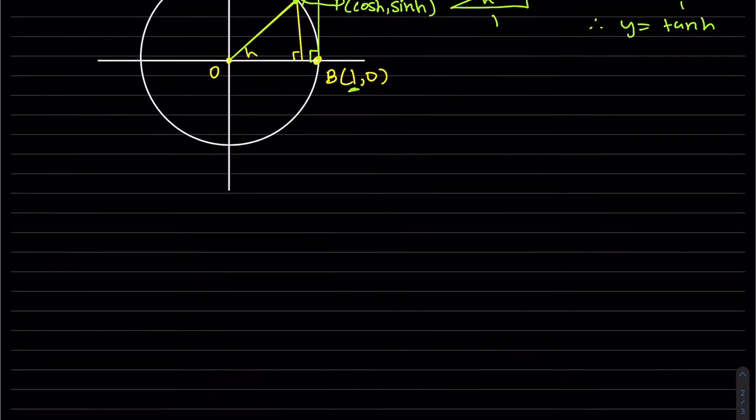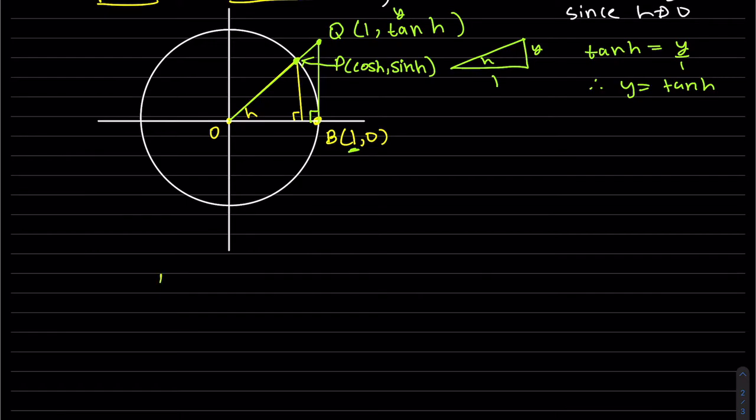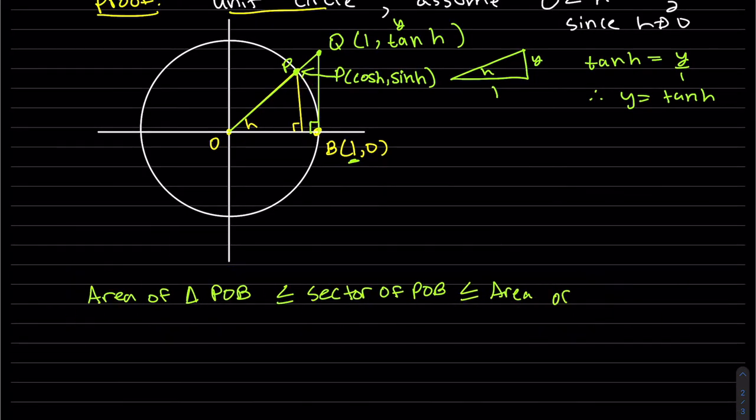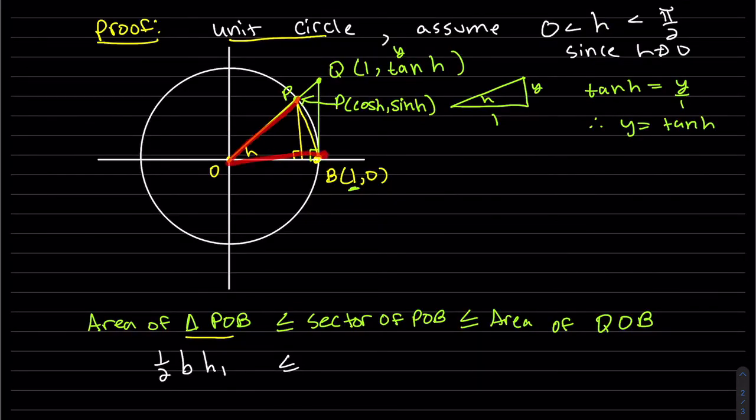Okay, so the theorem relies on this picture. And what we have here is the area of our small triangle. This POB is smaller than the sector, same sector of P, O, B. The sector is here. And then the large triangle.